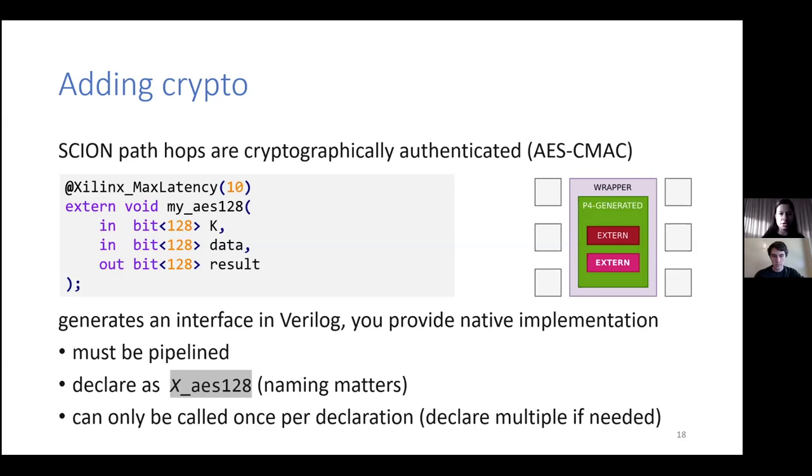Here on the slide, you can see an example extern declaration. And this declaration will then make the compiler generate an interface for us. And then we can provide native implementation for this extern. There are some technical details here, such as the extern implementation must be pipelined because everything is pipelined. The extern must be named in a specific way because of the way the scripts handle this. And one can only call the extern once per declaration. But once you figure these out, this allows you to mix and match the high-level P4 code with some highly optimized native implementations. So in our case, we got a very fast AES implementation that we can call from P4 and use it to do the check.